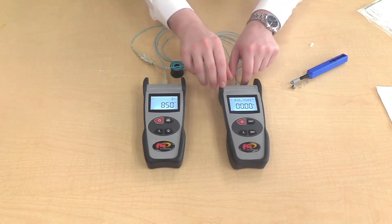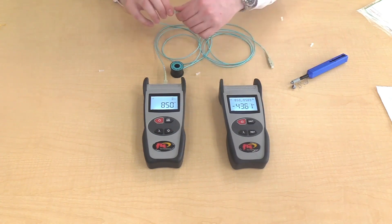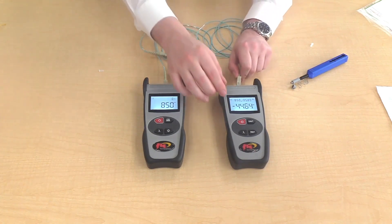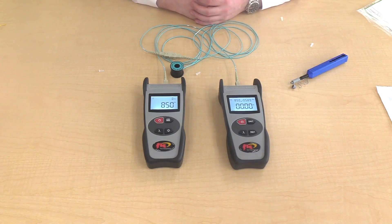To test the other connector, simply remove the connector from the power meter. Insert it to the adapter and take the other connector and attach it into the power meter. The display shows the loss in dB of the other connector.